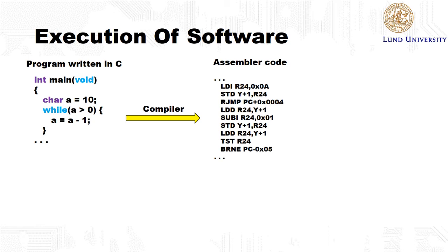Assembly code is still human-readable, but as you can see it gets more complex. Three lines of C code translate to nine lines of assembler code here. This shows the benefit of using a high-level language like C — you write a few lines and get a lot of assembler code. The C program can also run on different platforms, whereas assembler code only works for a specific platform. This is similar to VHDL, where you can describe hardware at a high level of abstraction and target different FPGAs or ASICs.